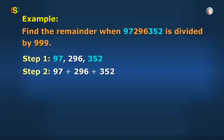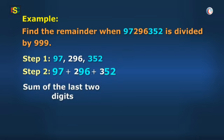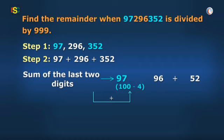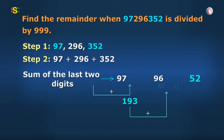And adding them, I will first add last two digits, or units and tens digits of each number. That is 97 plus 96 plus 52, or 97 plus 100 minus 4 is 193. Then 193 plus 52, that is 50 plus 2 is 245.